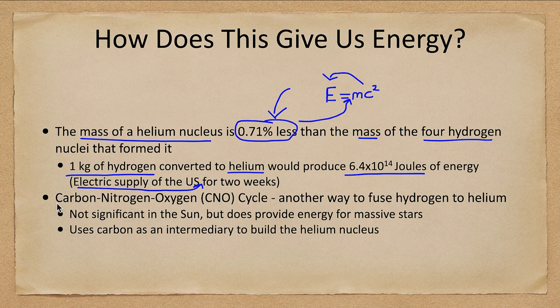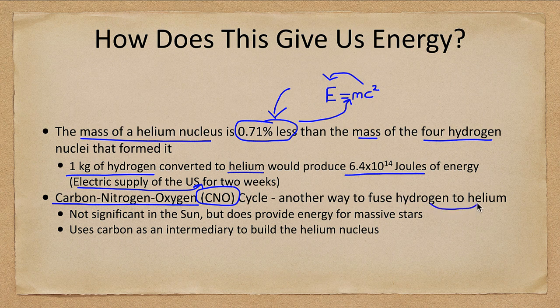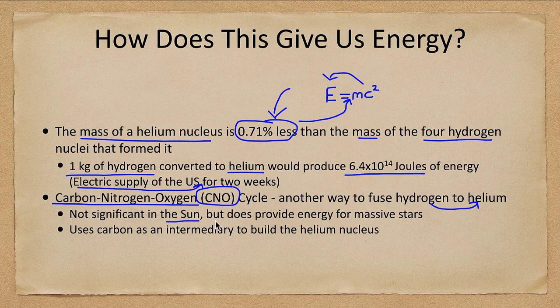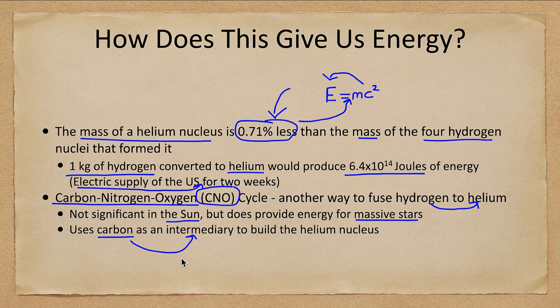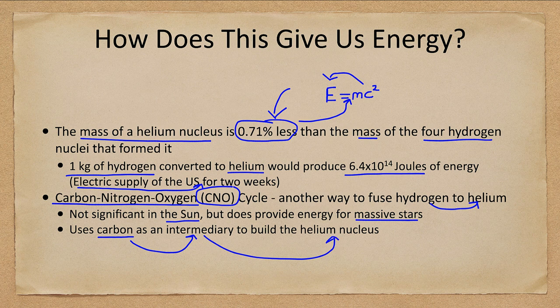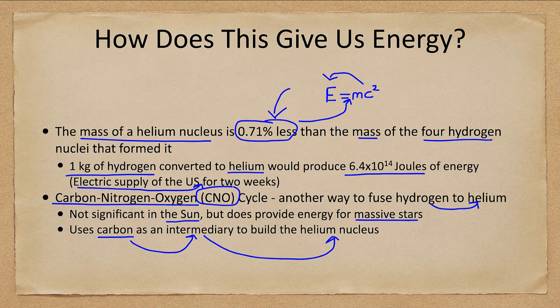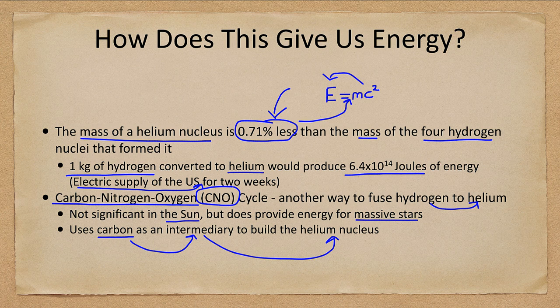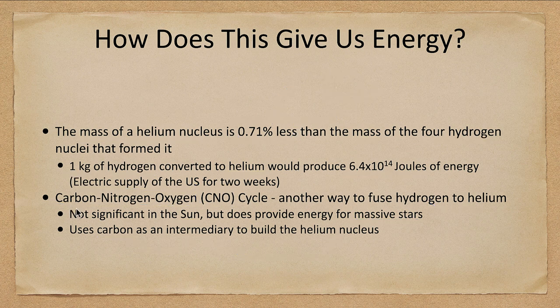There is another way to fuse these together called the carbon nitrogen oxygen or CNO cycle. This is another way to fuse hydrogen to helium and it's not significant in the sun but it does work for stars that are several times more massive than the sun. Essentially it uses carbon as an intermediary. You add atoms to the carbon and that eventually forms a helium nucleus. You'd add a proton to carbon then another proton. It forms nitrogen and then oxygen and eventually you would pop off a helium nucleus and get back to carbon again. It doesn't work except at much higher temperatures than we get in the sun, but it is important for our massive stars.